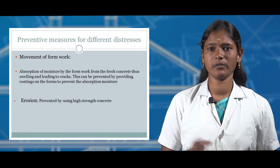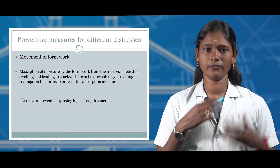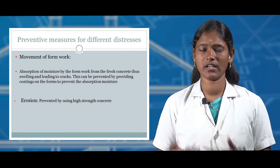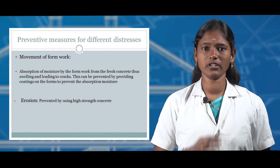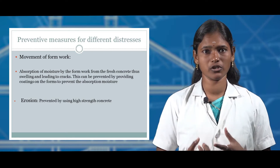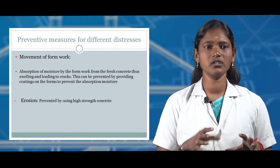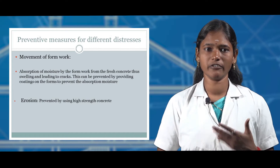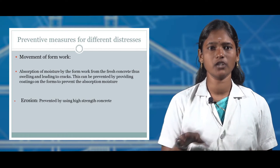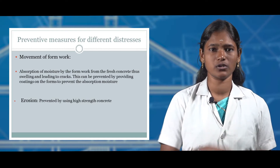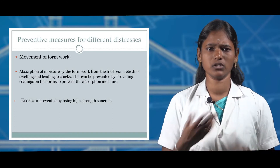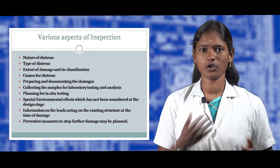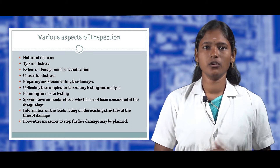Preventive measures for different types of distress include formwork movement and erosion. Movement of formwork is mainly due to absorption of moisture from fresh concrete, leading to micro-cracks or swelling, which can be prevented by applying a coating layer to the formwork. Erosion can be prevented by using high-strength concrete.